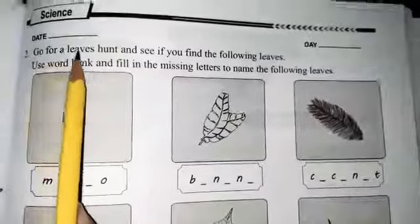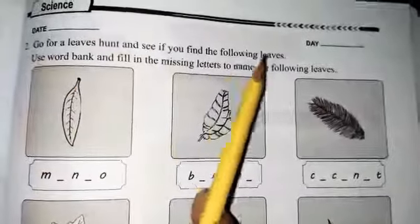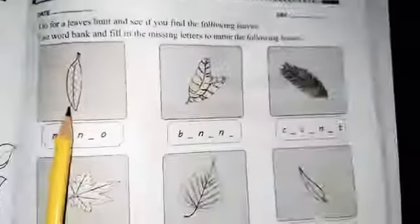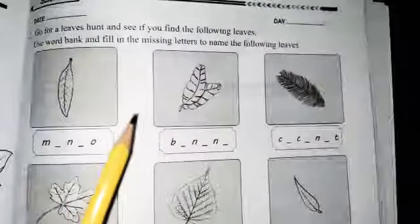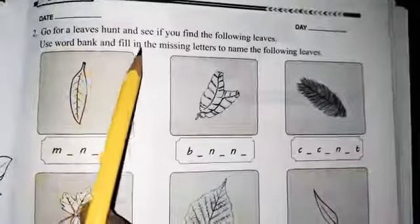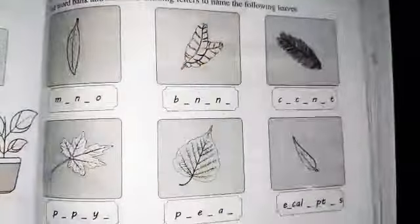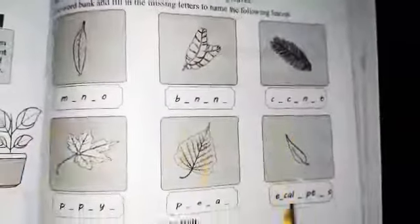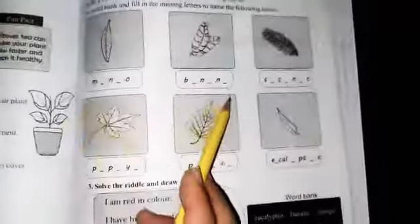Question two: go for a leaves hunt and see if you find the following leaves. What do you have to do students? You have to find out these leaves from your garden or from park and use word bank and fill in the missing letters to name the following leaves. There are the names of leaves but some letters are missing from these blanks.